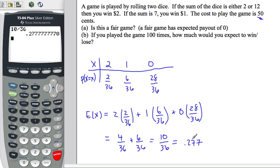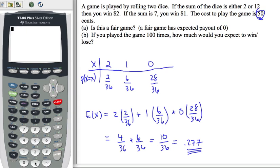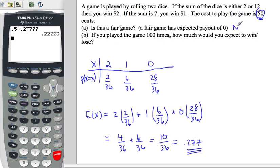It costs 50 cents to play. Over the long haul, you'd expect to have about 27 cents in your pocket per game. So if you're paying 50 cents and making about 28 cents on average, you're losing. 0.50 minus 0.2777 equals about 22 to 23 cents lost on average per game. So this is not a fair game.